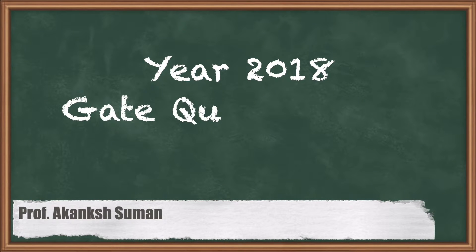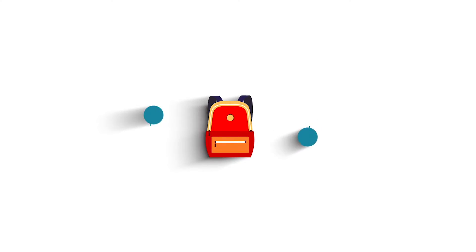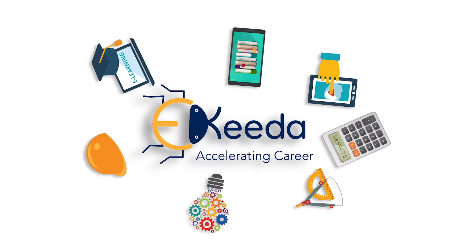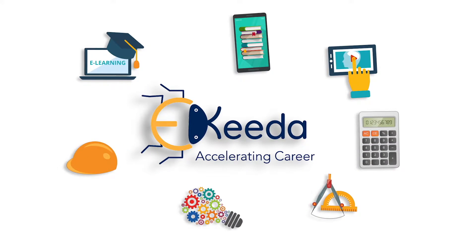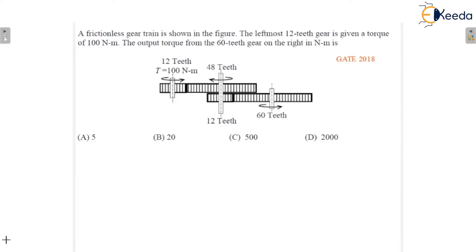Hello everyone, now we are going to discuss the questions of GATE 2018. A frictionless gear train is shown in the figure. The leftmost 12-teeth gear is given a torque of 100 Nm. The output torque from the 60-teeth gear on the right in Nm is.